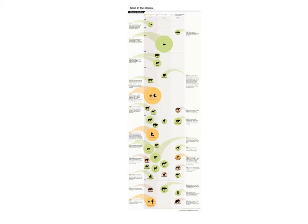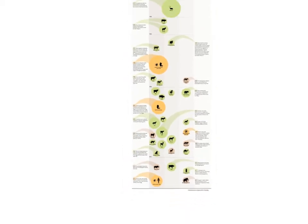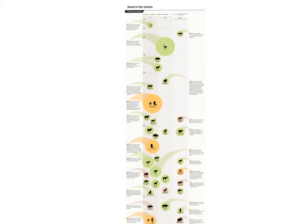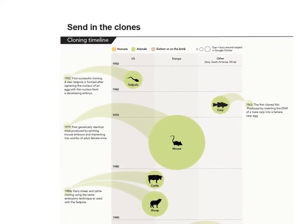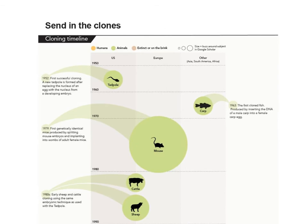Let's discuss this timeline, which compiles the history of cloning in animals. On the chart, orange represents humans, green represents animals, and purplish-red represents extinct or endangered species. The size of each entry reflects the amount of buzz around the subject in Google Scholar — essentially how important it was to research and how frequently it was cited.